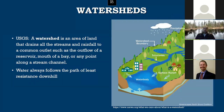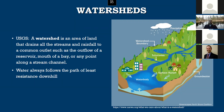A good place to start when thinking about stream ecology is at the watershed level. A watershed is defined as the area of land that drains all of the streams and rainfall to a common outlet, such as the outflow of a reservoir, the mouth of a bay, or any point along a stream channel. Water always follows the path of least resistance downhill, and as any drop of rain starts to flow downhill, it'll meet up with other raindrops. They eventually form into rivers, and all the area upstream of any point on a river is what you would call the watershed.